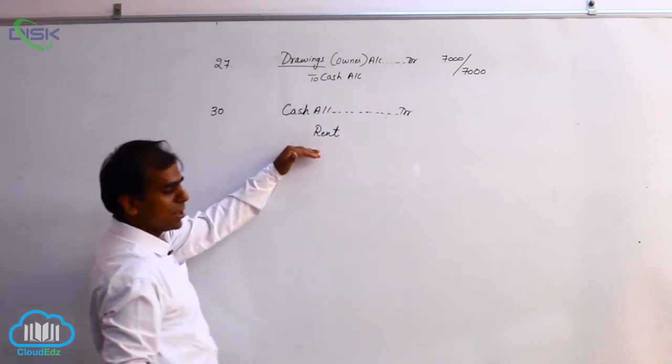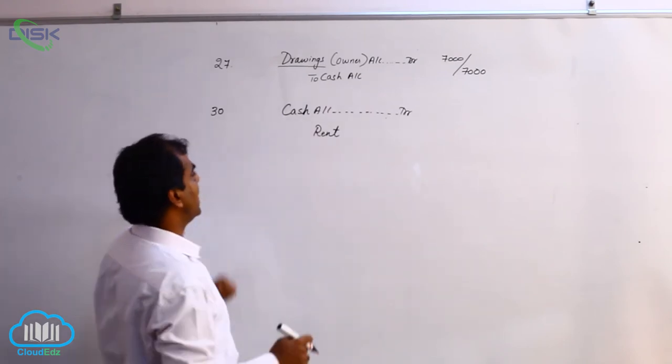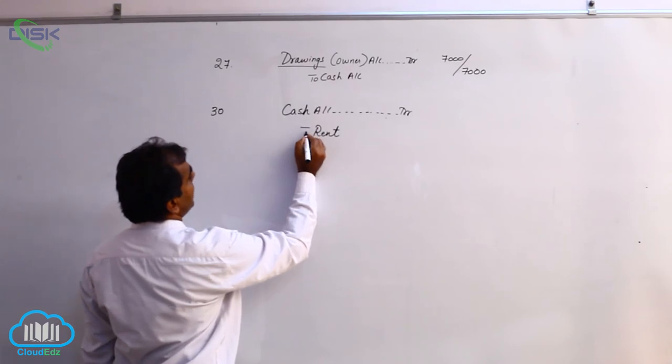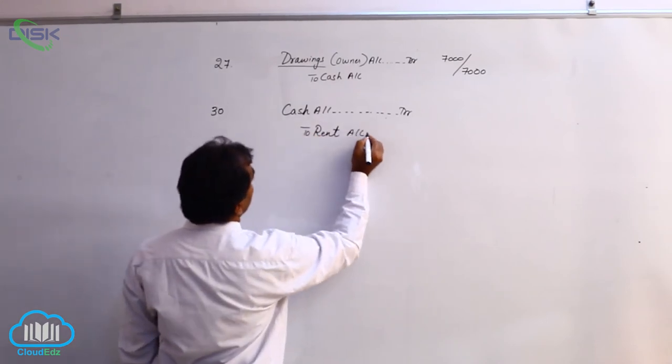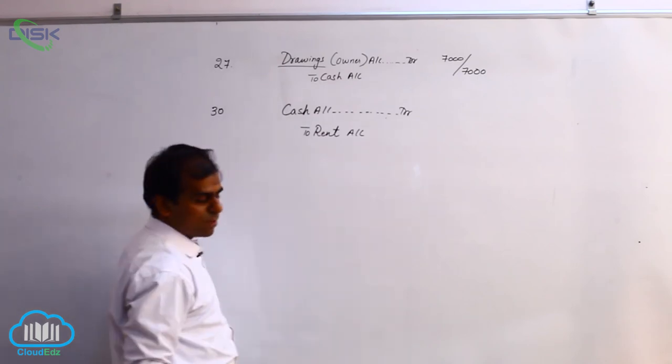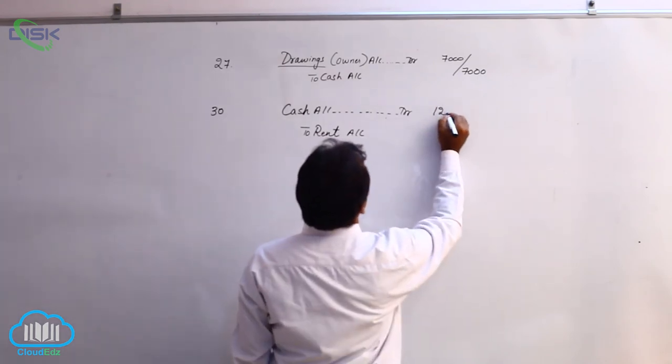Here, when you are receiving cash, the rent is becoming income for you. Therefore, credit all incomes and gains. That is the reason you are crediting rent. The amount is 1,200.